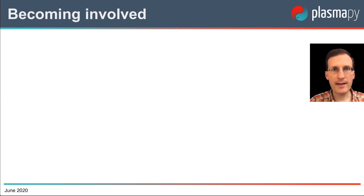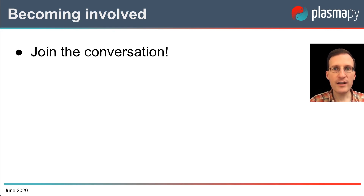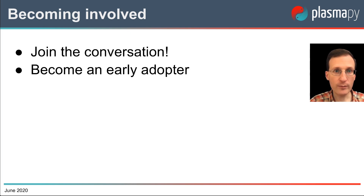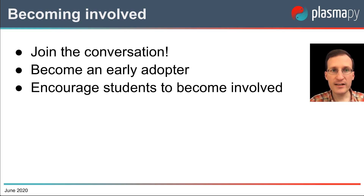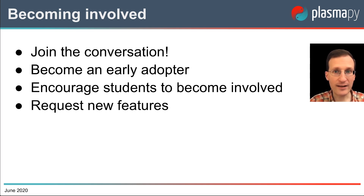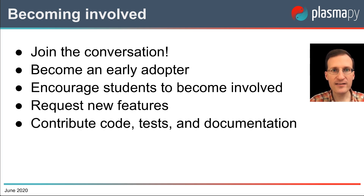The PlasmaPy project is by and for the plasma science community. Its success depends on community participation. The first way to become involved is to join the conversation — check the video description for links to our communication platforms. You're also welcome to attend our weekly online community meetings. You can become an early adopter by using pre-1.0 beta versions of PlasmaPy as they are released. Advisors can encourage students to become involved. It is incredibly helpful for members of the broader plasma community to request new features, especially for functionality that could help you complete a research project. Anyone in the broader community is welcome to contribute code, tests, and documentation. Contributions can be, and even should be, driven by your own research needs, and not just dictated by the PlasmaPy roadmap.